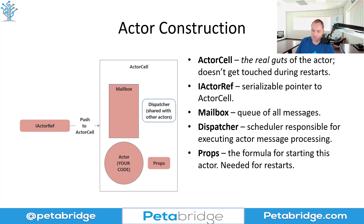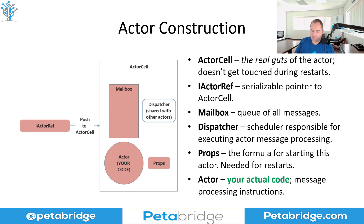Finally, we have Props — the formula used for starting this actor. The Props get baked into the actor cell, and the reason why we do that is because we need it in order to restart this actor in the event that it throws an unhandled exception. You can learn more about how actors restart in our video linked above. And then there's the actor itself, which is your actual code. You can think of your actor as all of the message processing instructions, all of the state plus persistence, and any other functionality you need. So your actor code is just one small part of what actually makes an actor. The actor system and the ActorOf method is what's responsible for instantiating all these other components and returning them to you in the form of an actor reference.